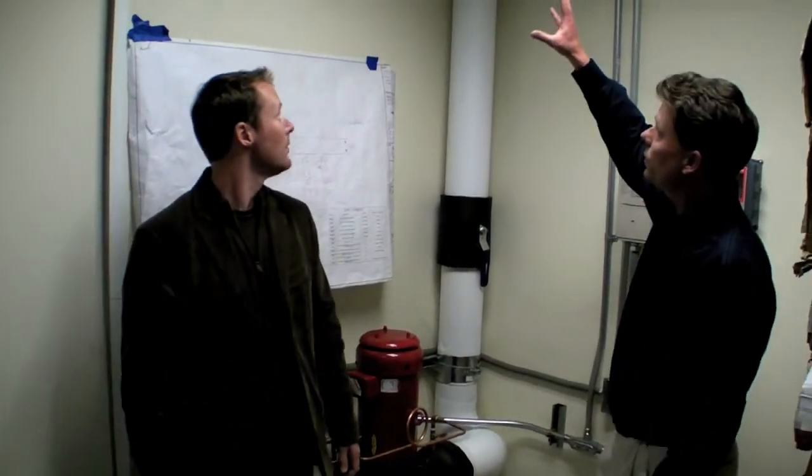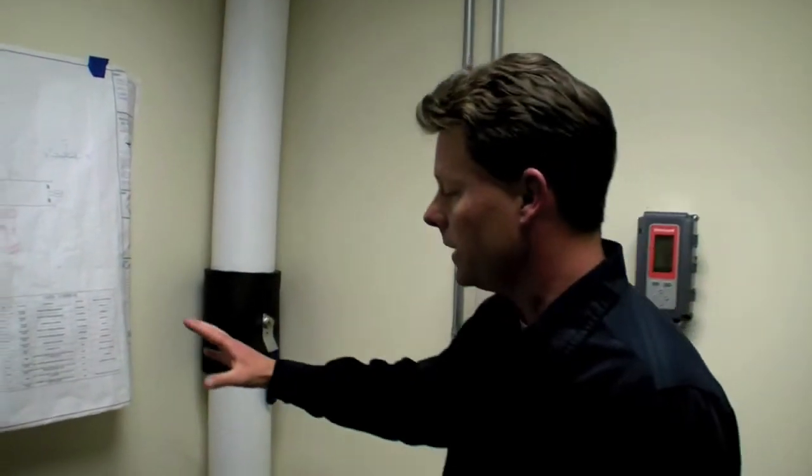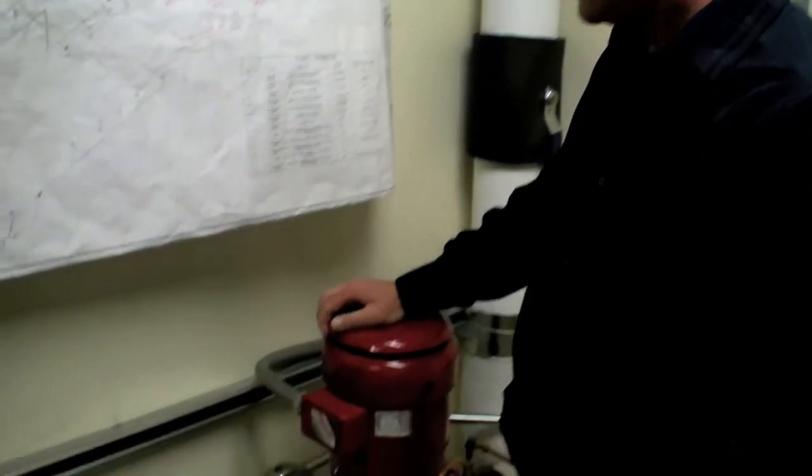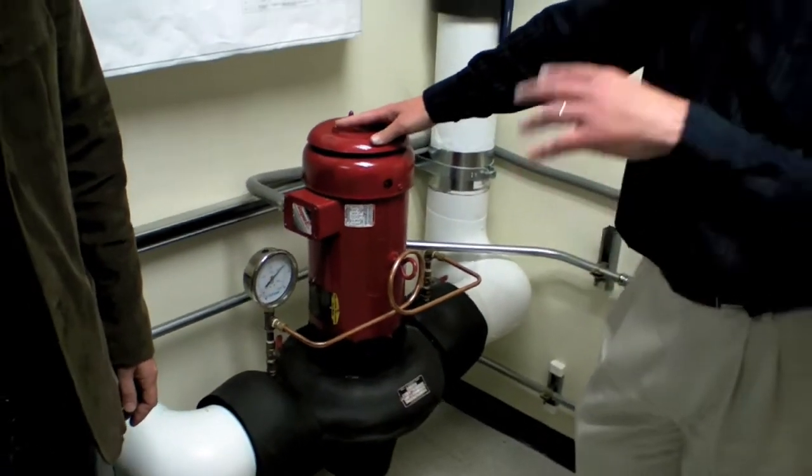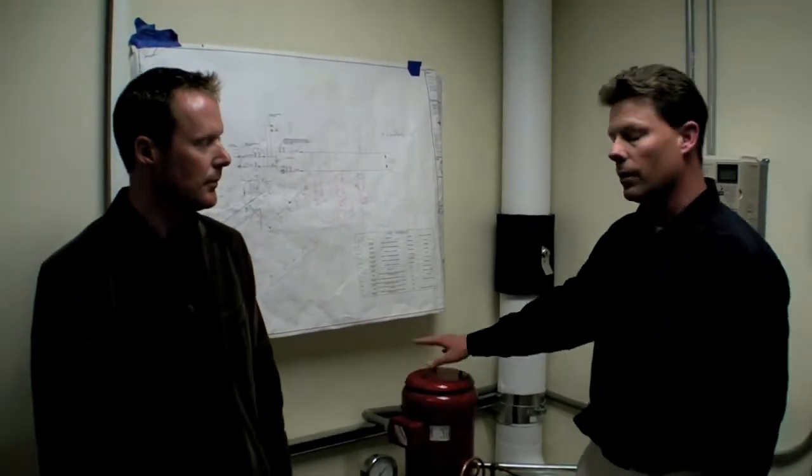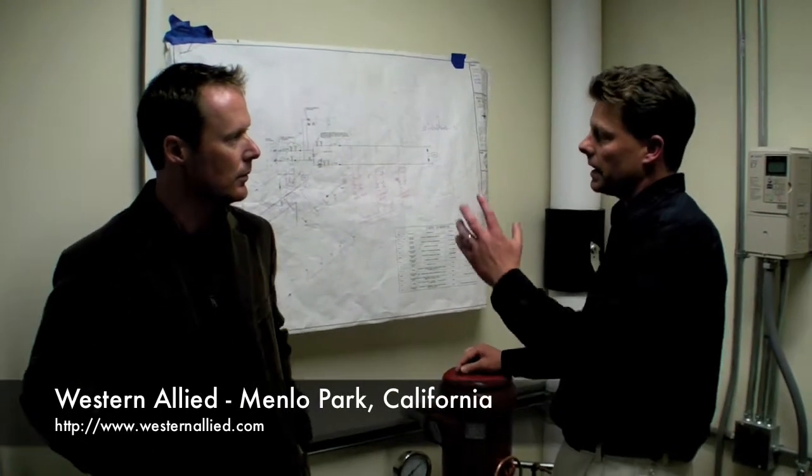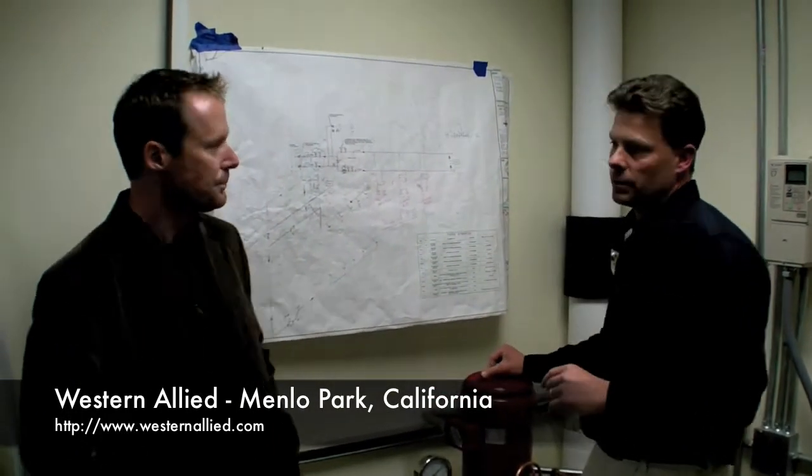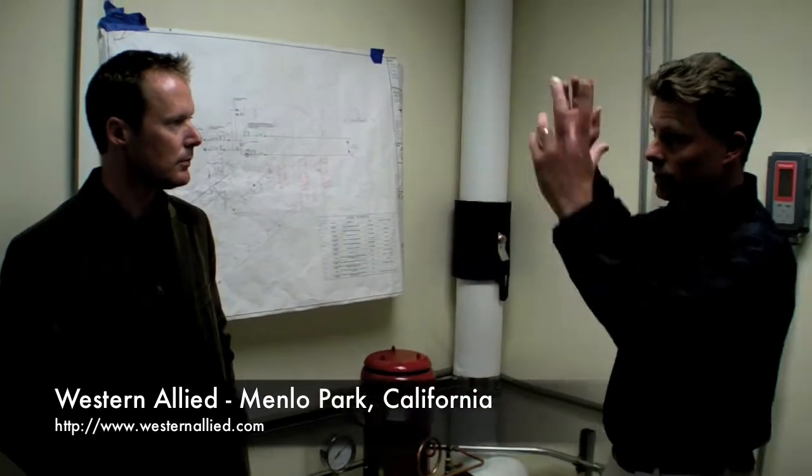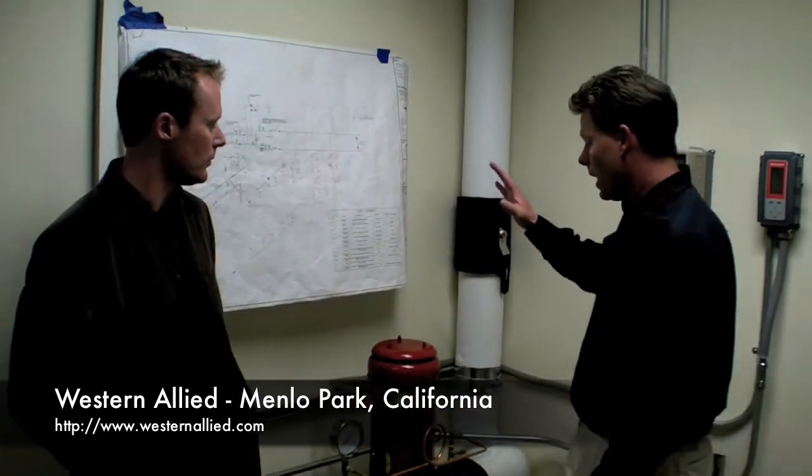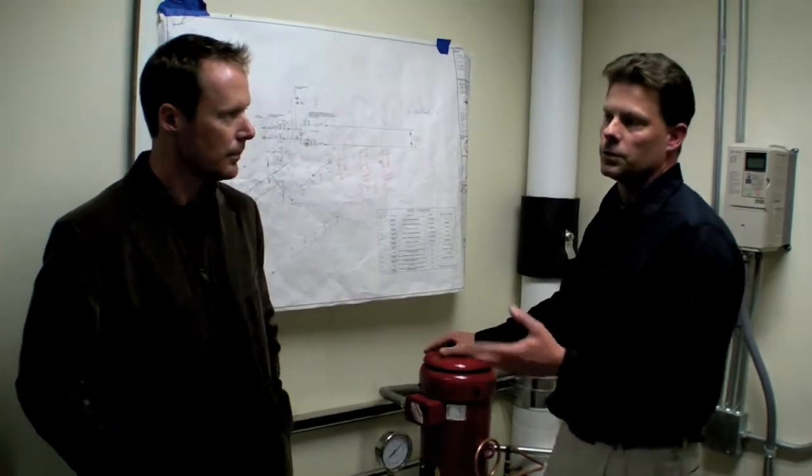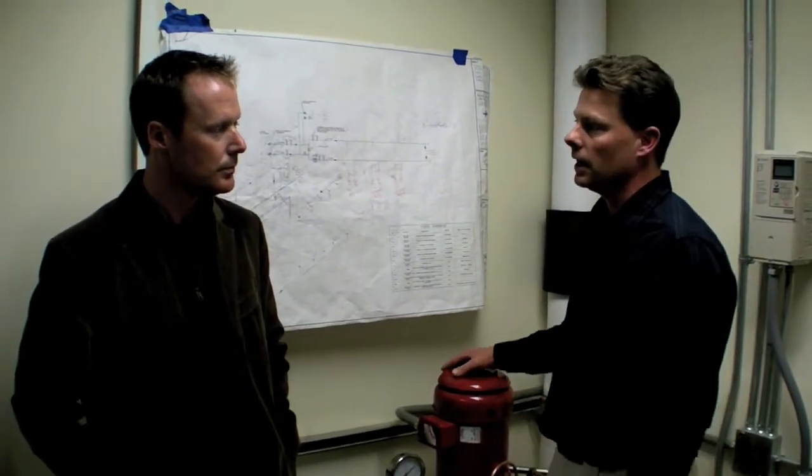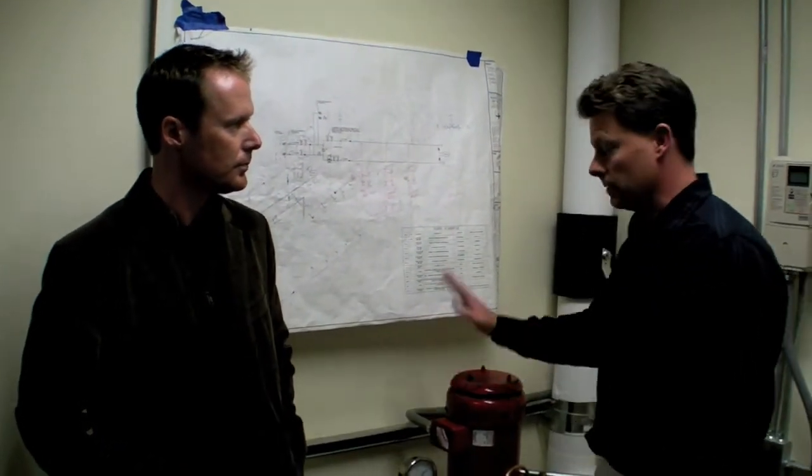To supply cooling to the solutions that we're testing, we needed to have a chilled water loop that would enable us to not only vary flow, but also vary temperature depending on what we were testing. The design of this system was done by Western Allied, and they actually donated all the engineering time associated with it and the labor to install all the pieces and parts.